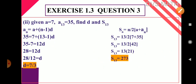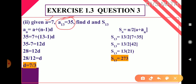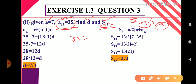Sub-question 2: given a = 7, a₁₃ = 35, find d and S₁₃. Observe here — a₁₃ and S₁₃. Both have 13, so n = 13. Don't think that n is not given here — since a₁₃ and S₁₃ both have 13, the value of n is 13.